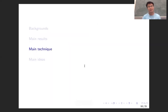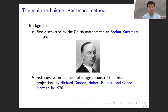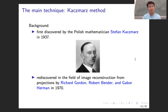Now I will introduce the main technical idea we use. The main technique is called the Kaczmarz method. It was first proposed by the Polish mathematician Stefan Kaczmarz in 1973, and actually it was rediscovered by Rich Goddard, Robert Byrd, and Garber Harman in 1970. This is a very simple method with a very clear geometrical meaning, which will simplify the analysis.